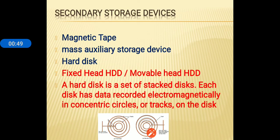Now, secondary storage devices. In this category we have the magnetic tape, auxiliary storage devices, and hard disk — fixed head and mobile head — as types of hard disk. Hard disk is also one of the secondary storage devices.